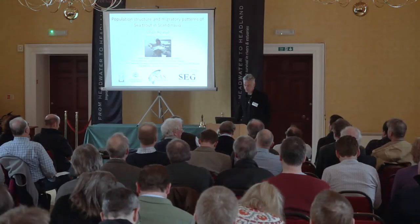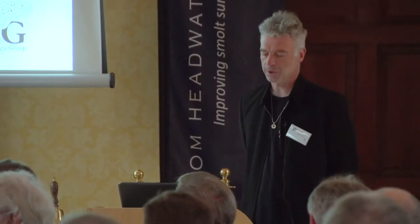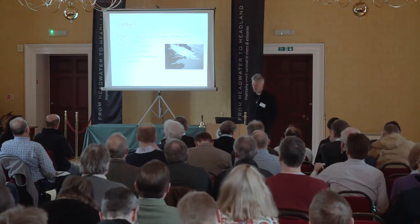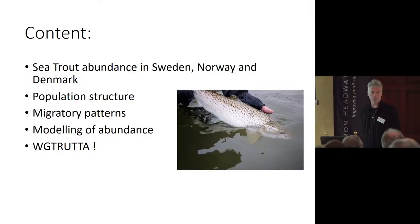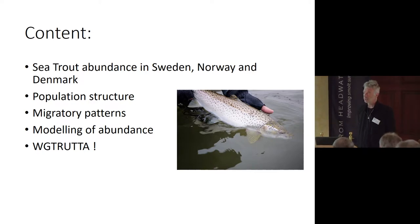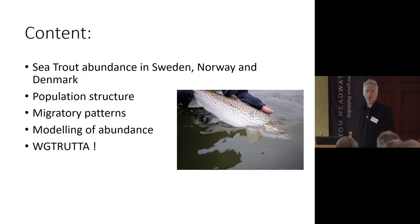I'm going to move the context from the UK to Scandinavia and talk about population structure and migratory patterns. I'll cover sea trout abundance focusing on Sweden, but also mention Norway and Denmark, along with some genetic work. The main focus will be on migratory patterns and mortality rates on the outward migration, various approaches to model abundance, and a plug for the ISIS working group Vigotröstra.